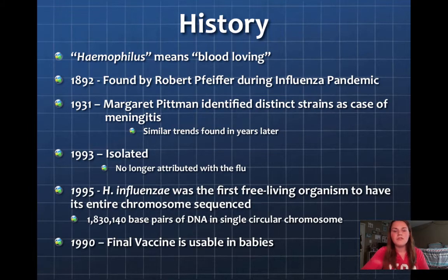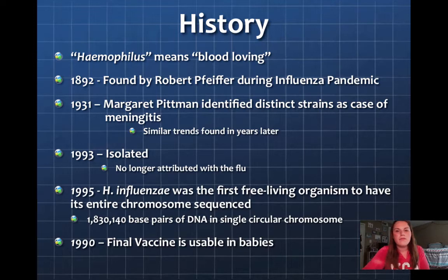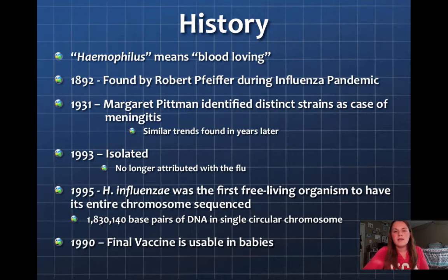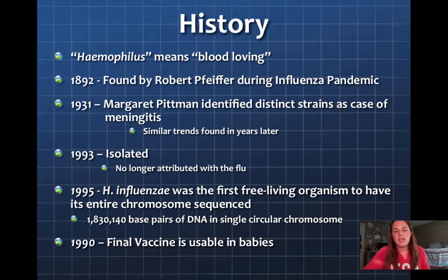So a brief history. Haemophilus itself actually means blood-loving. Haemophilus influenzae was found in 1892 by Robert Pfeiffer during the influenza pandemic, and because this is when it was found, they believed it to be the cause of this pandemic, and that is why the species name is influenza.